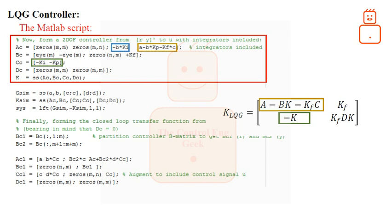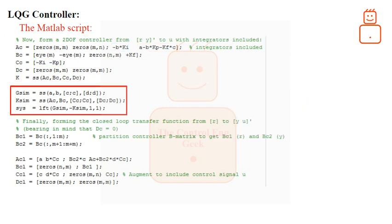As we have realized the LQG gain in matrices AC, BC, CC, and DC, we now need to formulate these matrices as a state-space representation, given by the last line. The second portion of this part of the code shows how to combine the process with the computed LQG gain. The first line is the state-space realization of the process assuming two outputs, the second line does the same for the LQG gain, and the last line generates the feedback interconnection of the two models.